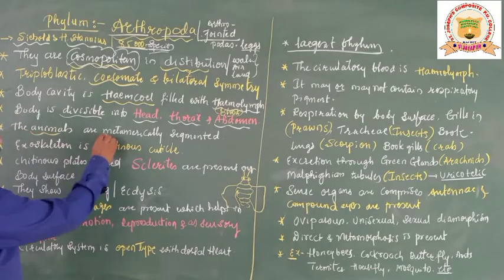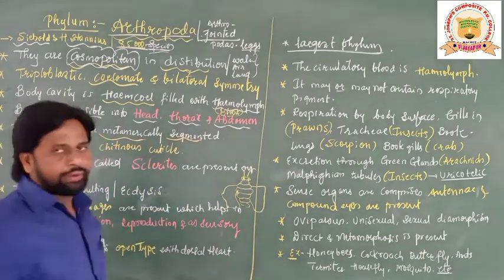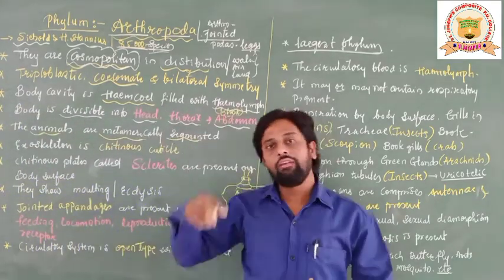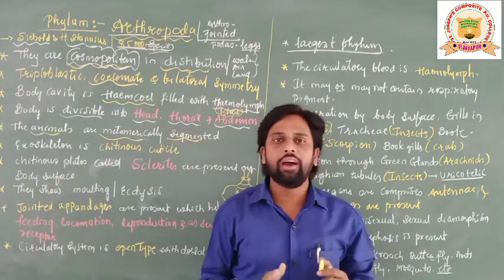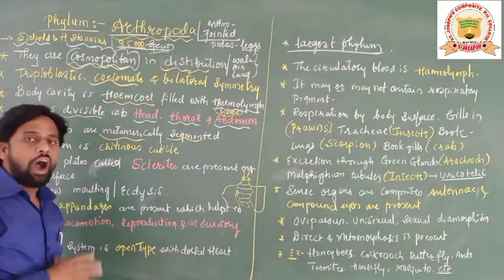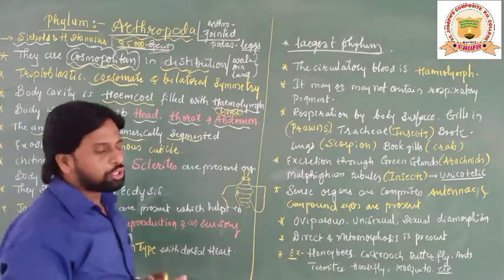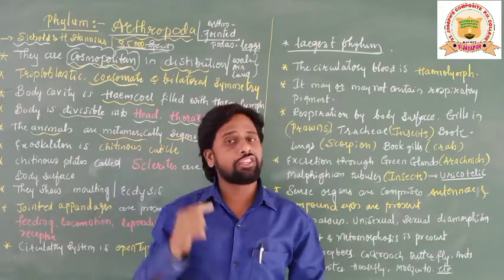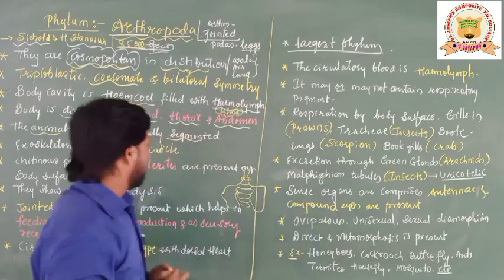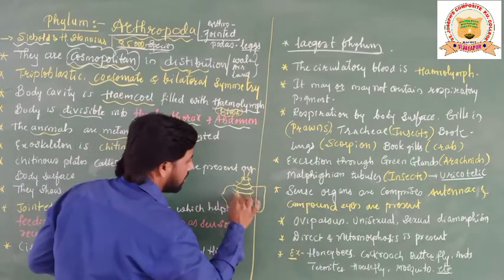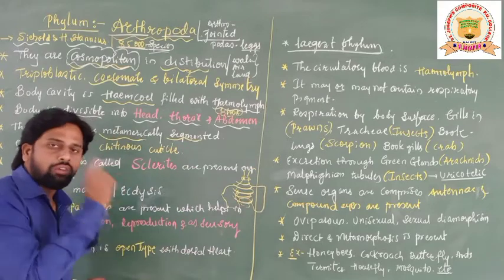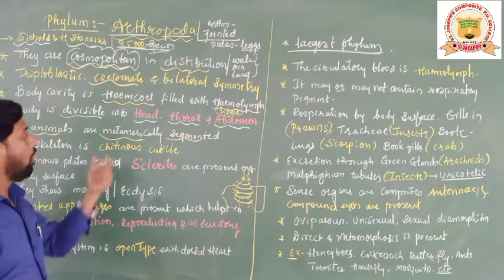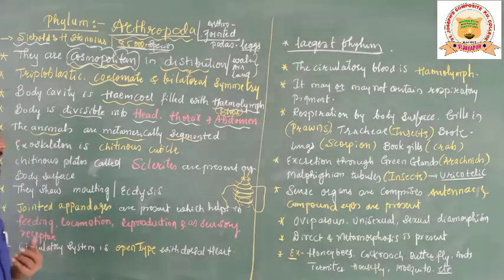Arthropoda animals are metamerically segmented. As we have also seen in the previous phylum Annelida, these animals show segments on their body. The body can be divided internally and externally into equal parts. These segments on the body surface make them what we call segmented animals or metamerically segmented.